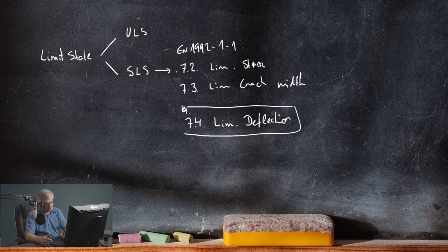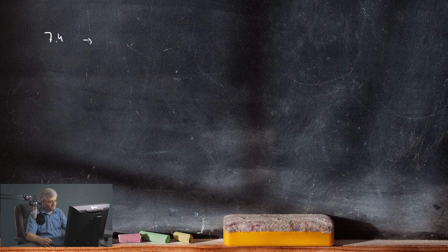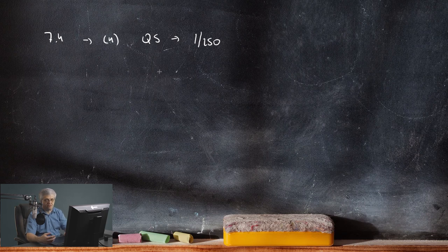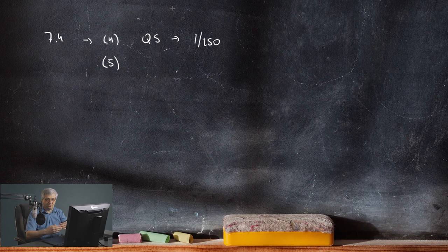And the deflection check is the topic of this video. In chapter 7.4 we have two parts. In part 4 it is described that we have to use the quasi-permanent combination, and with this combination we have to limit the deflection to 1 to 250. And then in section 5 it is described that after the building of the construction, the deflection should be lower than 1 to 500.